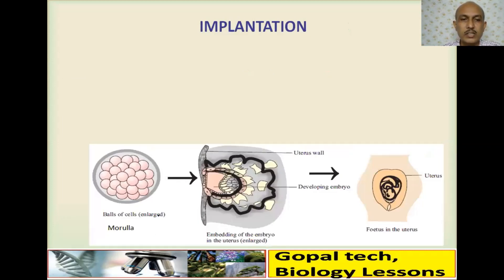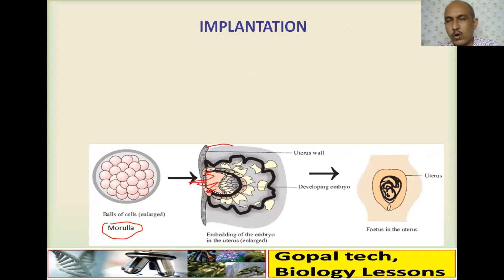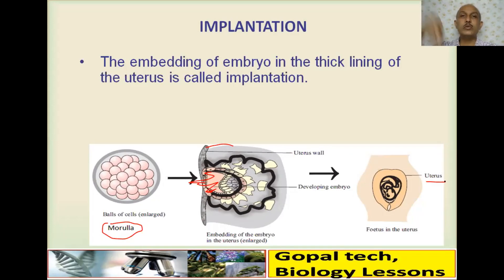There is a ball of cells called the morula. The embedding of the embryo in the uterus wall — the uterine layer — allows the embryo to take all the nutrients from the mother's blood and develop into a fully developed fetus. This embedding of the embryo in the thick lining of the uterus is called implantation.